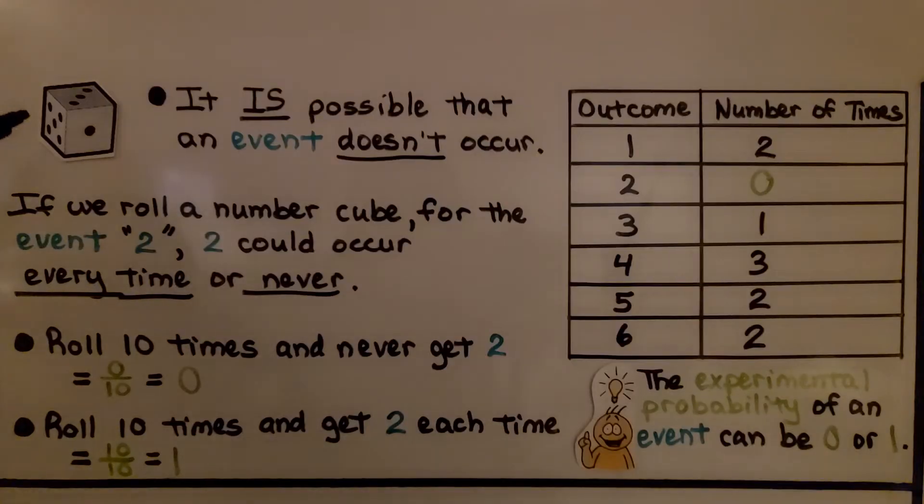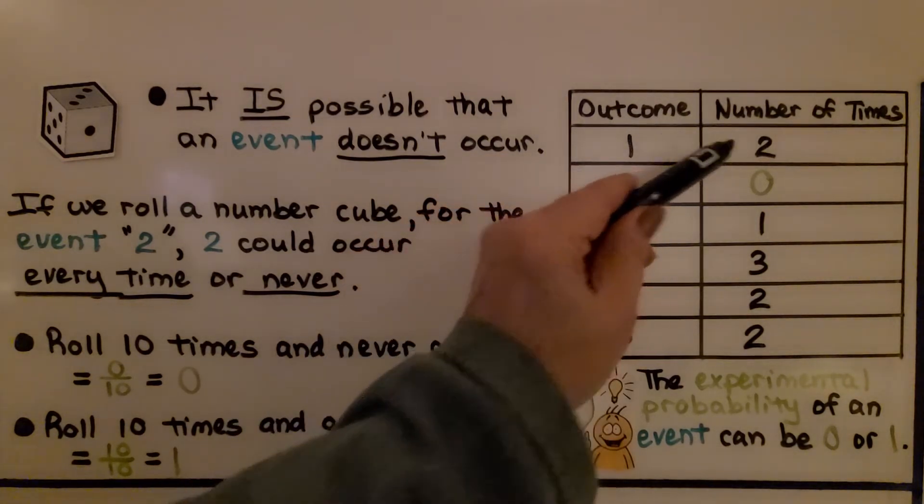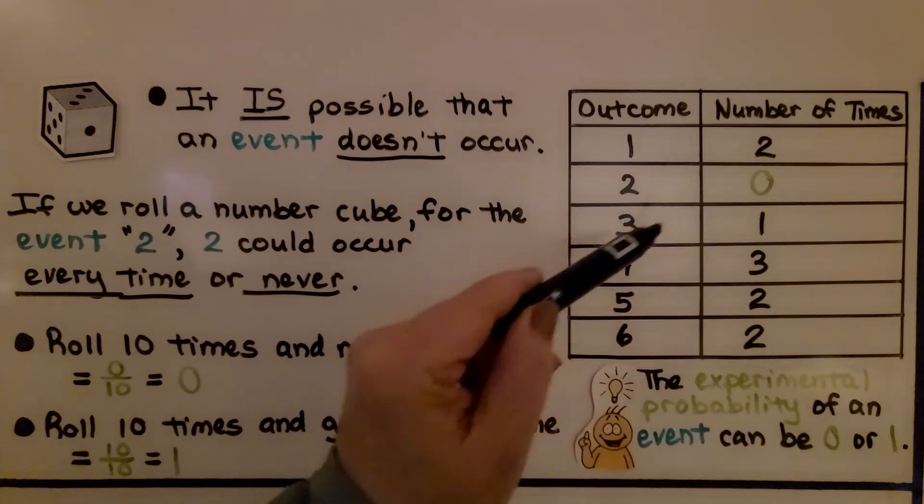Now we're going to roll a number cube. Is it possible that an event doesn't occur? If we roll a number cube for the event 2, we're trying to get 2 to be on the top. 2 could occur every time or never. We could roll and get a 1 twice, we could get a 2 zero times, we could get a 3 one time,